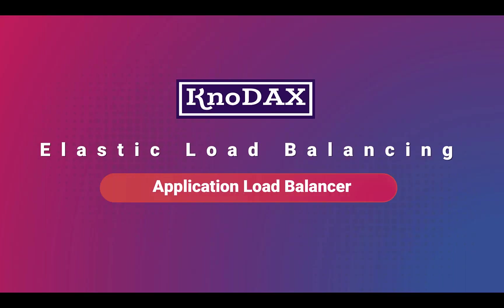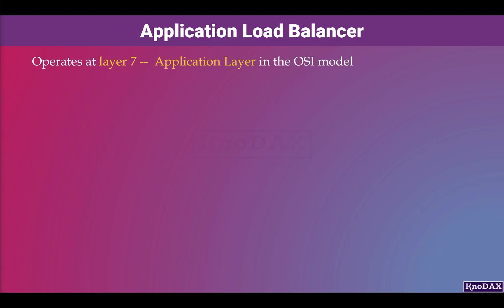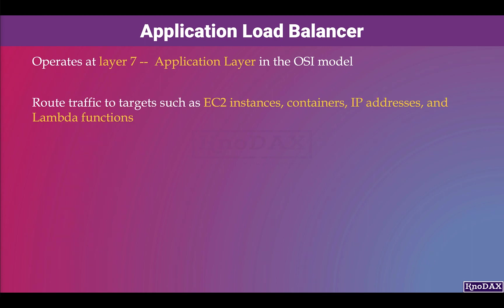This video is about Application Load Balancer, one of the AWS Elastic Load Balancer types. Application Load Balancer operates at Layer 7, which is the application layer in the OSI model. It can route traffic to targets such as EC2 instances, containers, IP addresses, and Lambda functions.